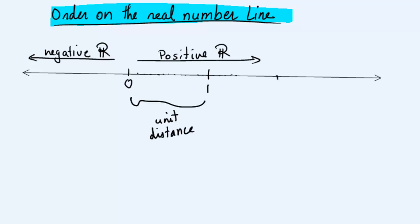So number 2 would be 2 unit distances away from 0. 3 would be 3 unit distances away from 0. 0.5 or one-half would be half a distance away from 0. Negative 1 would be 1 unit distance away from 0 on the left.